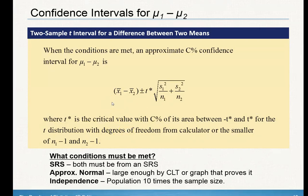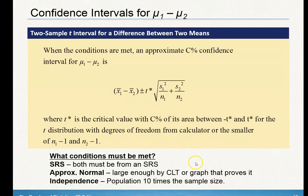In order to use your confidence interval, you're going to do the same state, plan, do, conclude. The difference is you're going to have to have two conditions for each of the three pieces. There are two simple random samples, and the samples have to be independent from two different populations. They both have to be approximately normal — you can say both sample sizes are greater than 30 by the central limit theorem.